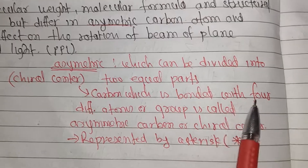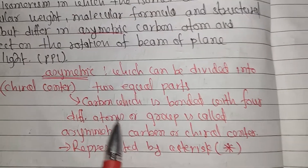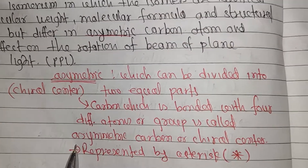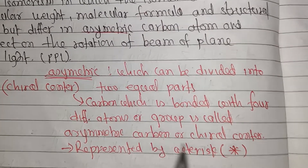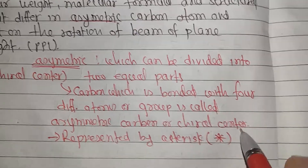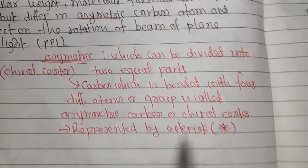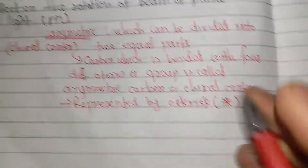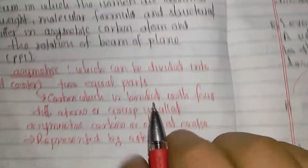A carbon atom which is bonded with four different atoms or groups is called an asymmetric carbon or chiral center.